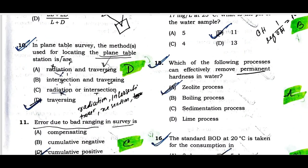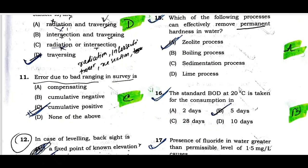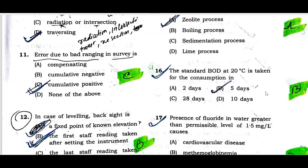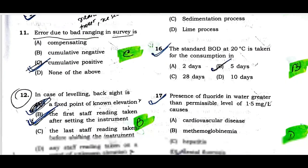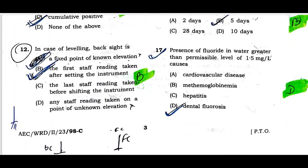Question number fifteen: Which of the following processes can effectively remove permanent hardness in water? The correct option is the zeolite process, option A. The standard BOD is taken at 20 degrees centigrade for 5 days. Option B is the correct one.